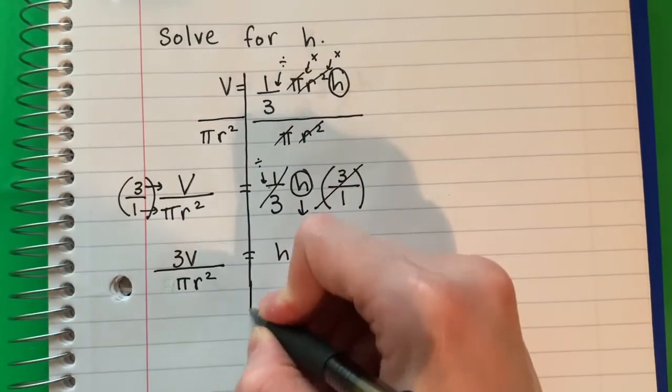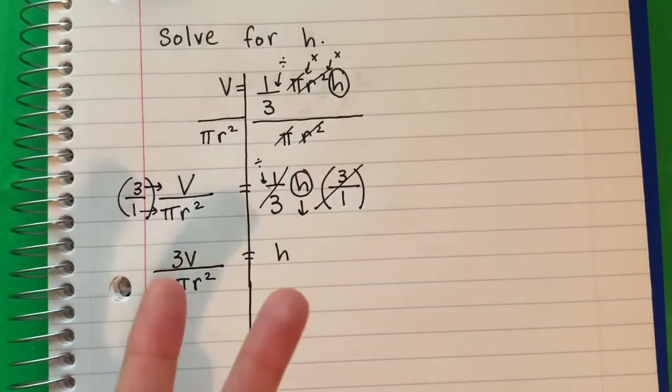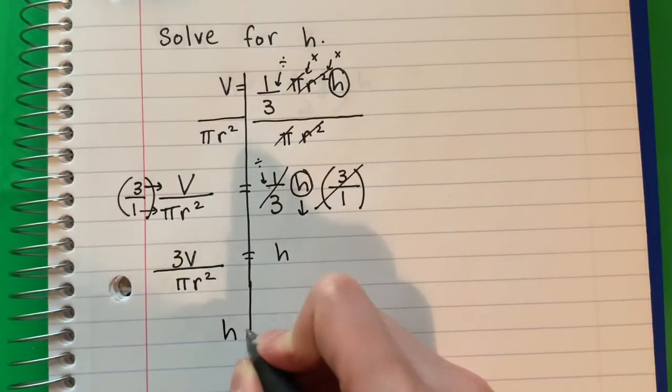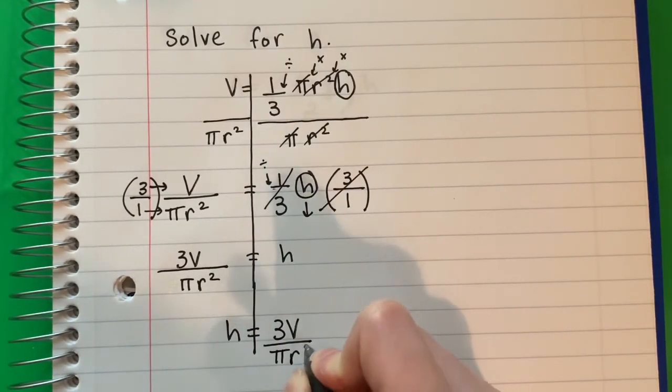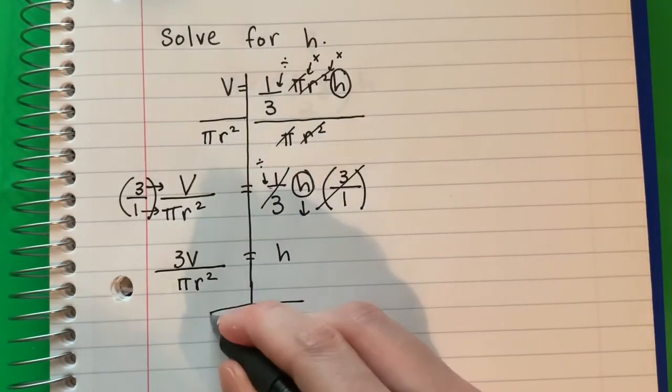And then the last step, el último paso, I'm going to go ahead and switch. So h equals copy 3V divided by π r squared. There is your answer.